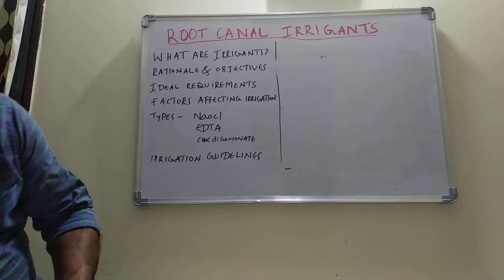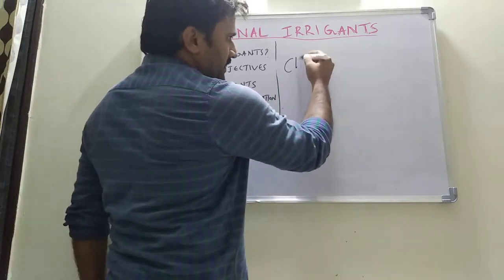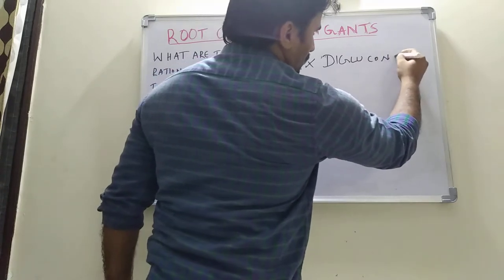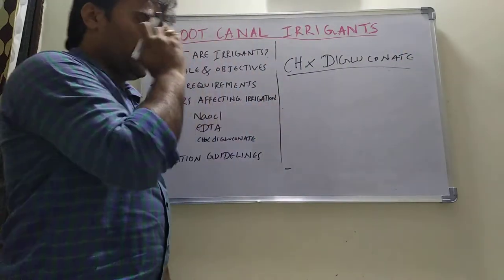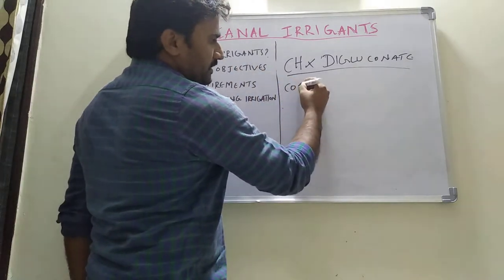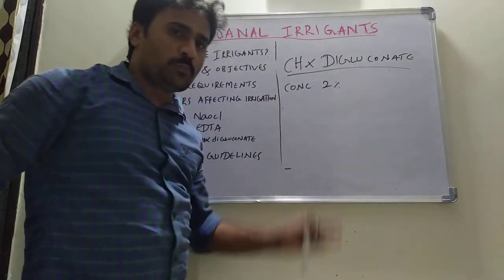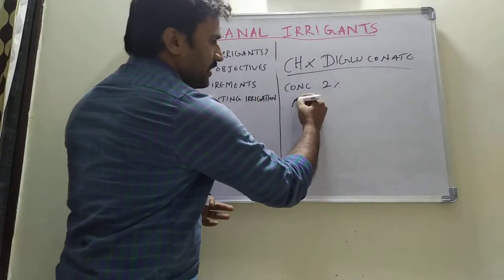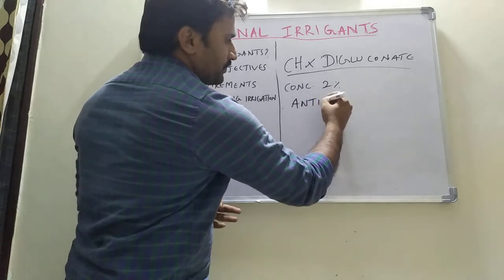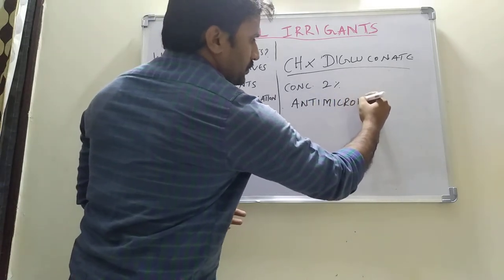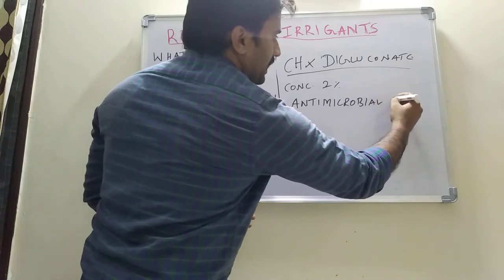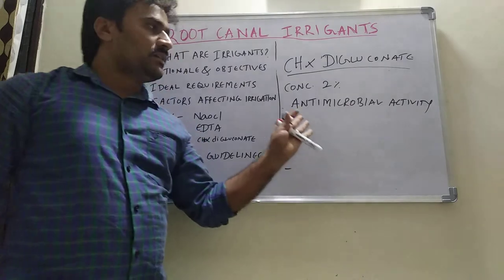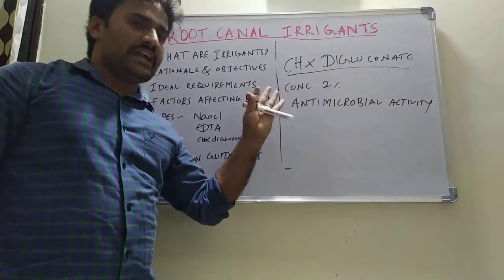Then coming to chlorhexidine digluconate. The concentration used is 2%. Its main capacity is antimicrobial activity, and it is used as an irrigant due to this property. It acts as both a bacteriostatic and bactericidal agent.